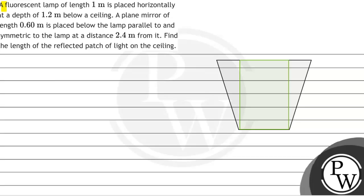Let's see this question. A fluorescent lamp of length 1 meter is placed horizontally at a depth 1.2 meters below a ceiling. A plane mirror of length 0.60 meters is placed below the lamp parallel to and symmetric to the lamp at a distance 2.4 meters from it. Find the length of the reflected path of light on the ceiling.